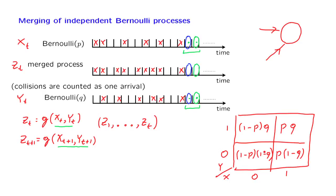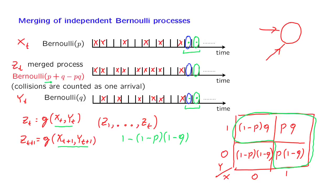The probability that we have an arrival in the merged process is the probability of this green event — the cases in which an arrival gets recorded in the merged process. This is the sum of those three probabilities, or equivalently 1 minus the probability of no arrival, namely 1 minus (1 minus p)(1 minus q). After expanding and simplifying, you end up with p + q − pq, which is the probability of an arrival during a slot in the merged process. This probability is constant across time, and together with the independence property, this establishes that the merged process is a Bernoulli process.